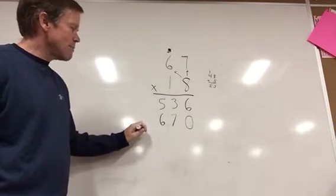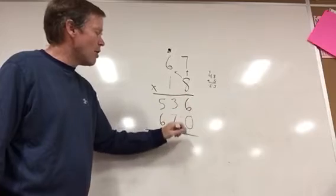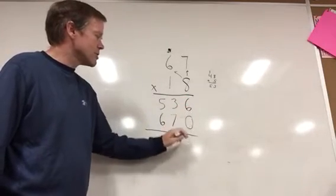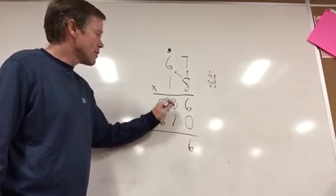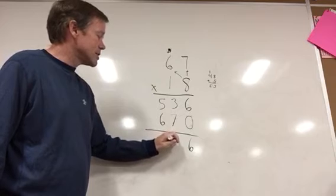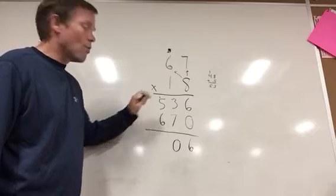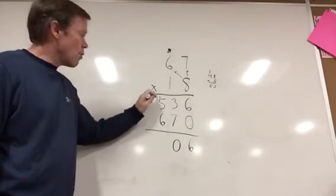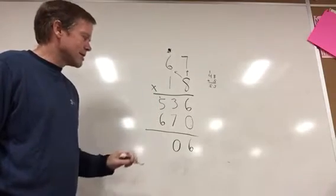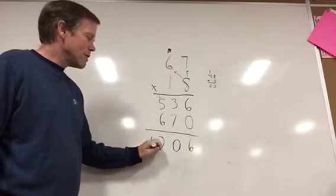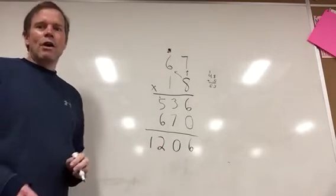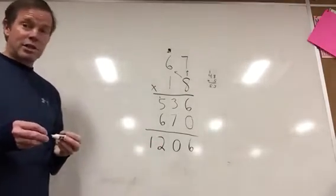The next step you do is to add them all up. So you do 6 plus 0 is 6, 3 plus 7 is 10. Again, you treat this like just a regular addition problem where you put your little 1 right up top. Then you do 1 plus 5 plus 6. That would give us 12. So your answer to that one is 1,206.